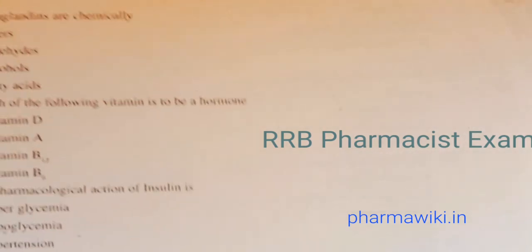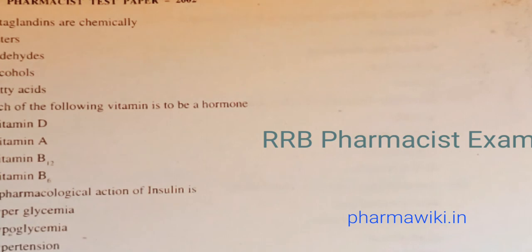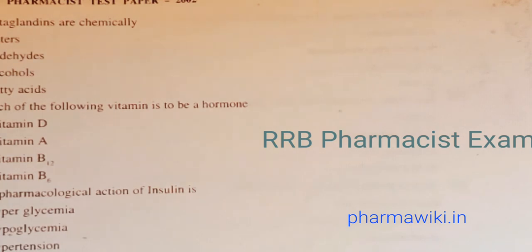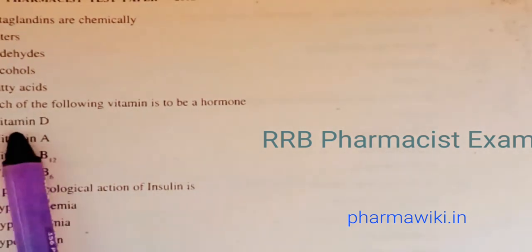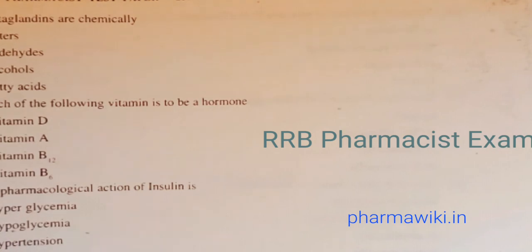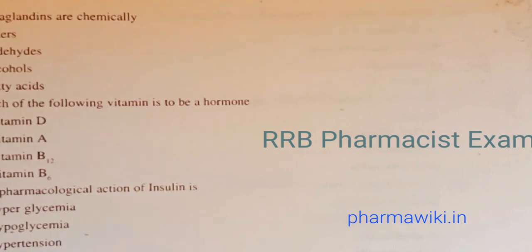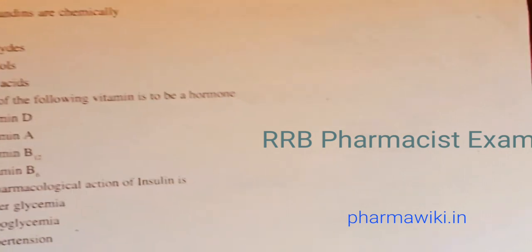Question 55: Prostaglandins are chemically — esters, aldehydes, alcohols, or fatty acids? The answer is fatty acids. Question 56: Which of the following vitamins is considered to be a hormone — vitamin A, D, B12, or B6? The answer is vitamin D.